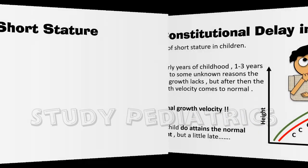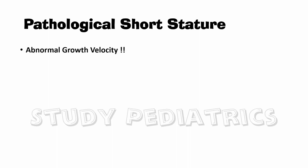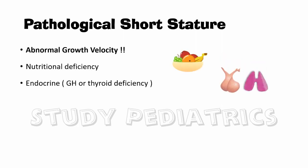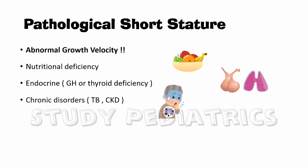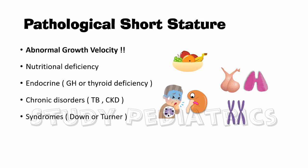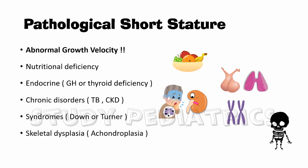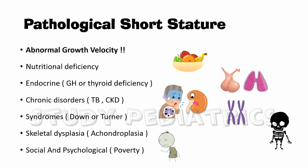Now coming to pathological short stature — as discussed earlier, pathological short stature has abnormal growth velocity. It can be caused by nutritional deficiency; endocrine causes involving growth hormone or thyroid deficiencies; chronic disorders like TB or CKD; syndromes like Down syndrome or Turner syndrome; skeletal dysplasia like achondroplasia; and social and psychological factors like poverty.